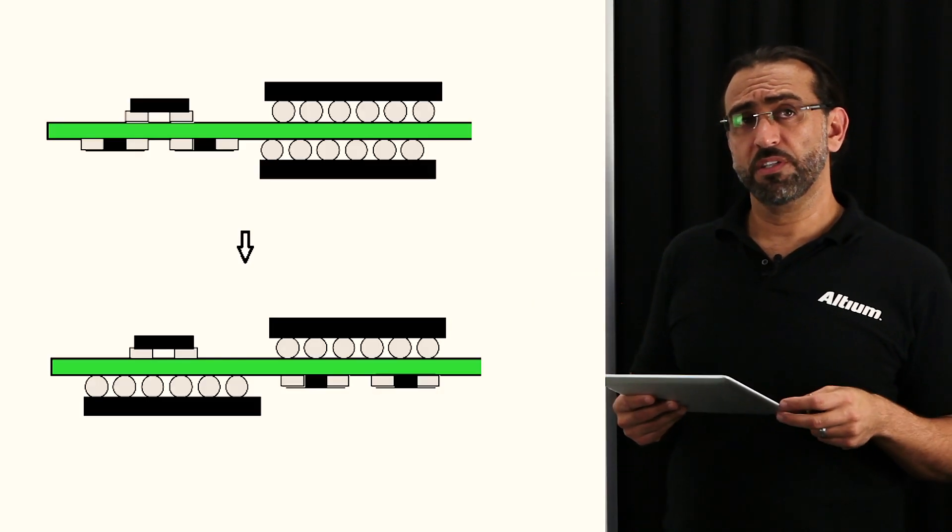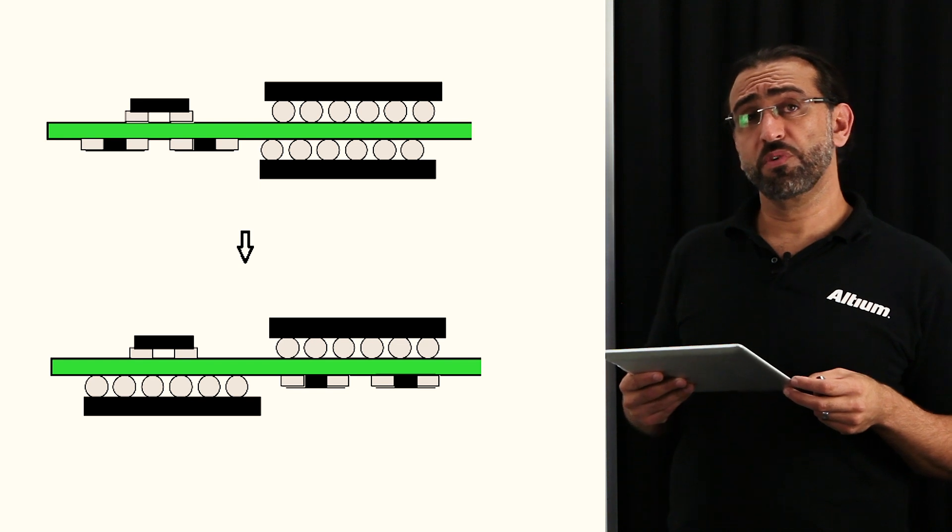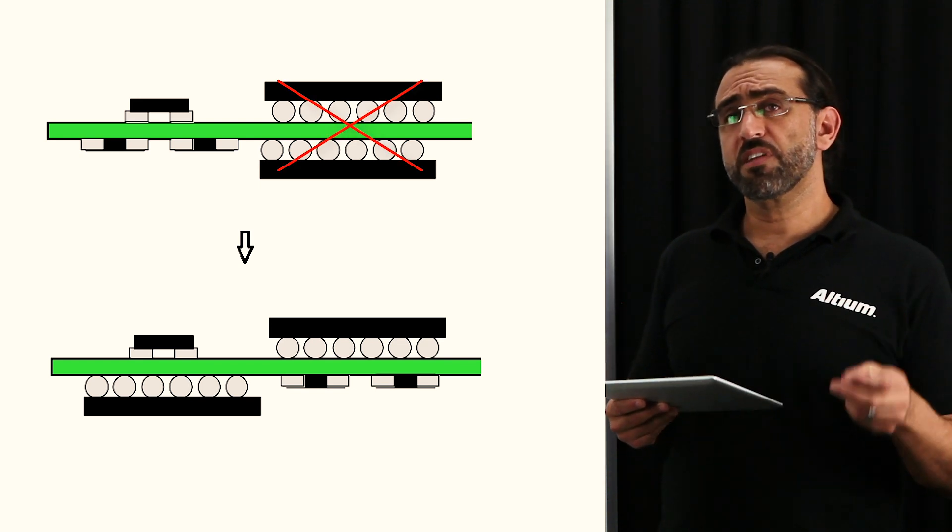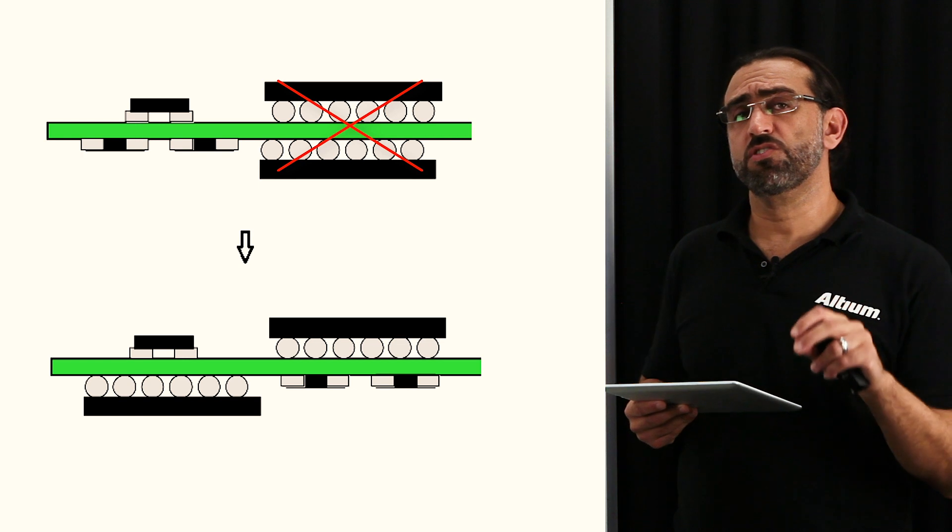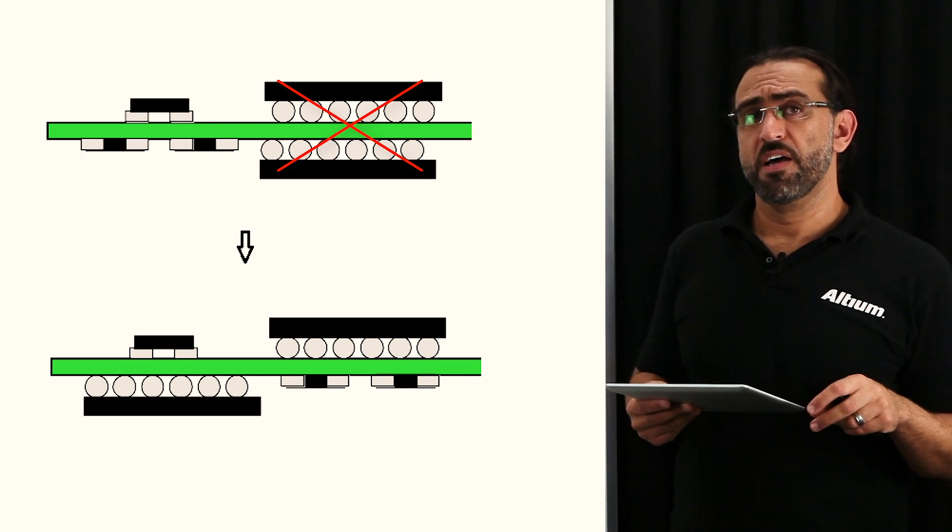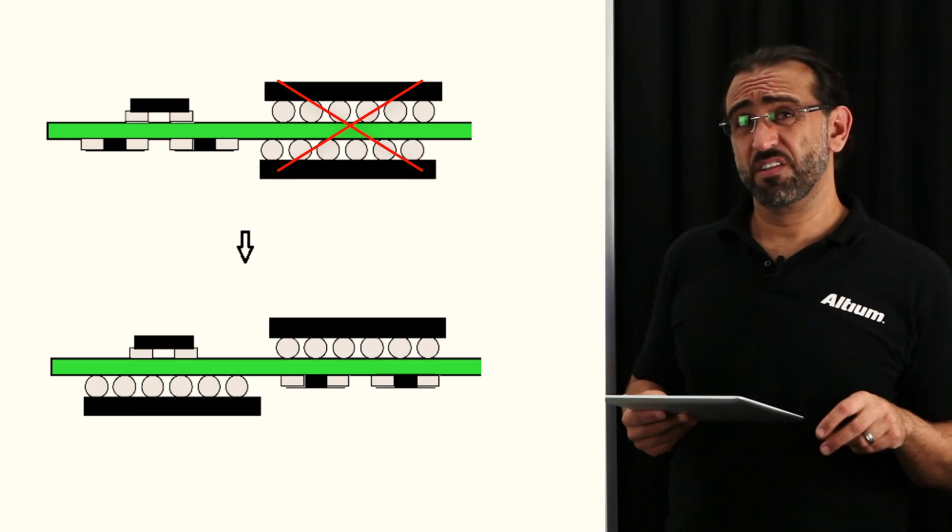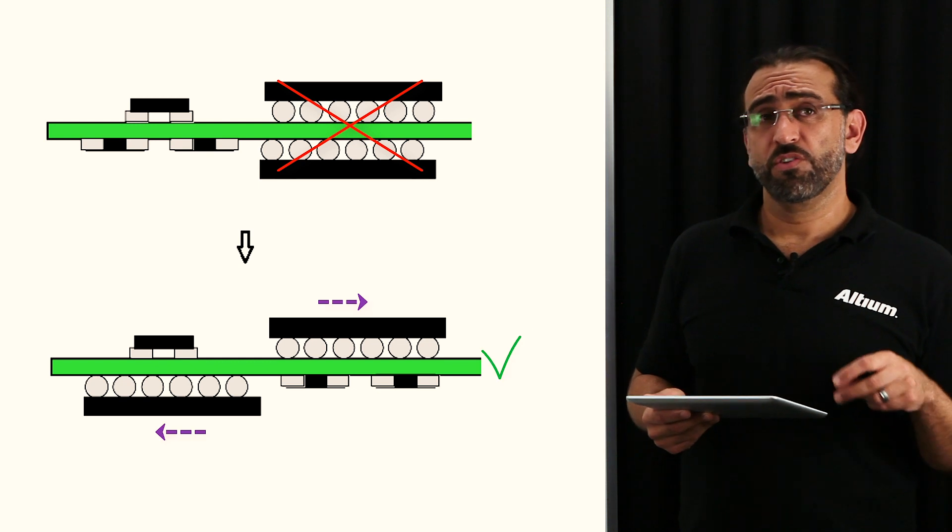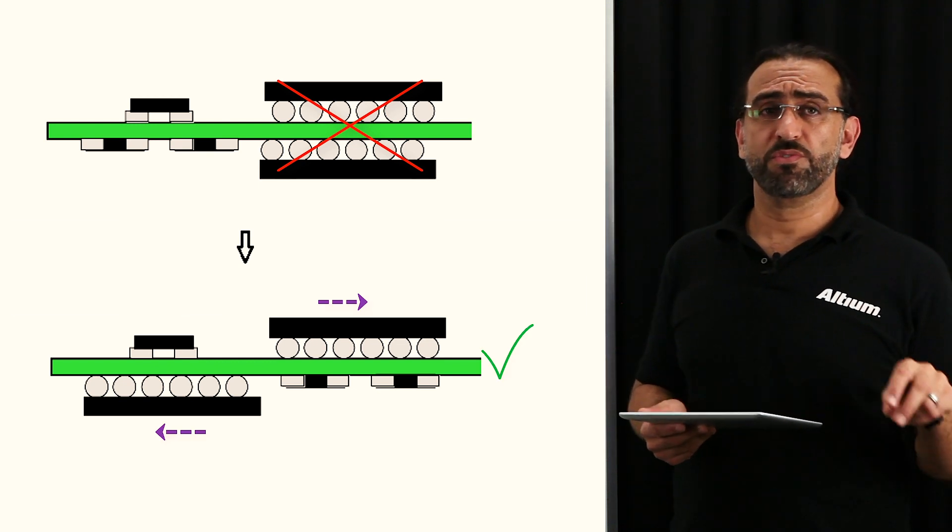And the next one we have here, if you have to put a BGA component on two sides of the board, it's never recommended to put them facing each other, as you can see here, as this setup makes it very difficult for X-ray inspection. So it's better to separate them, as we see here.